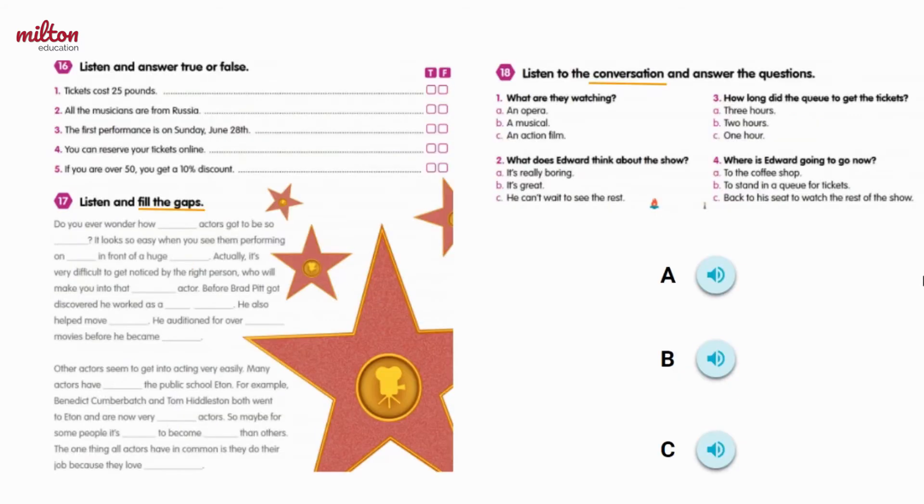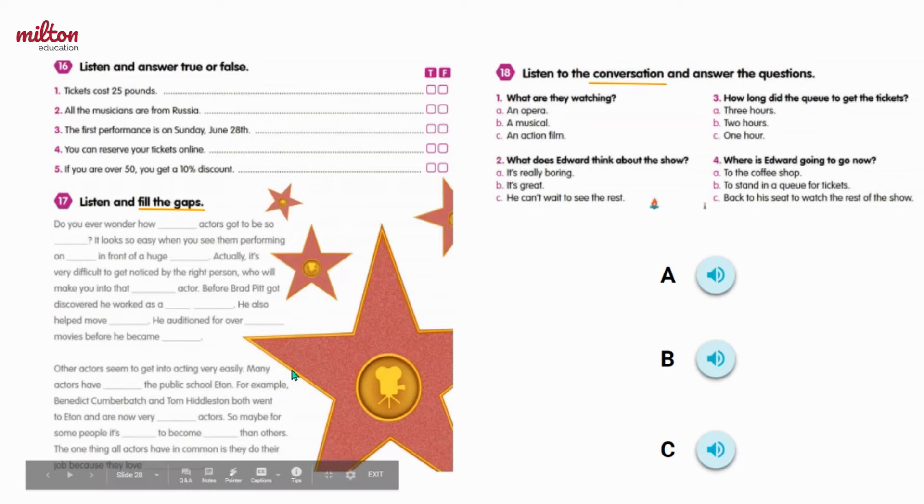Now, here are our listening exercises. Exercise 16 is the advert. Exercise 17 is the dictation. And exercise 18 is the conversation. Now, I have some audios here. I want you to listen to each one and decide which exercise the audio goes with.